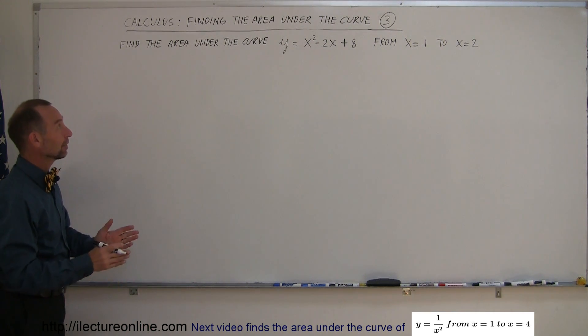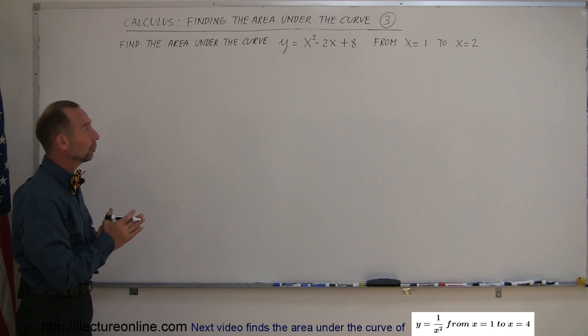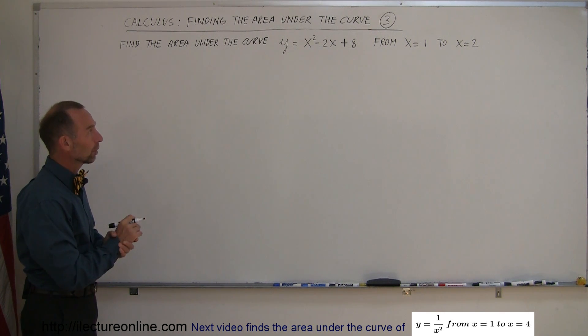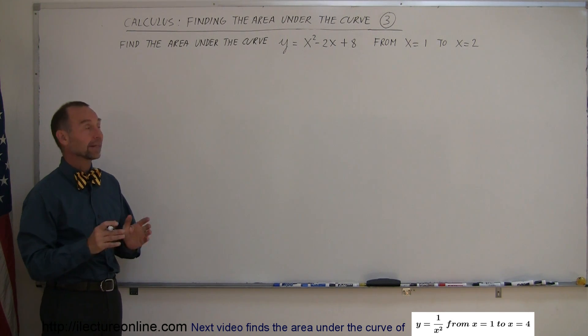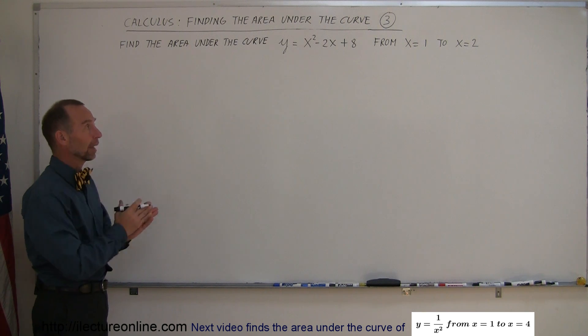Our next example on how to find the area under the curve deals with an equation that's a little bit more complicated than the first two. It says y equals x squared minus 2x plus 8, and we're supposed to find the area under the curve from x equals 1 to x equals 2.